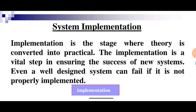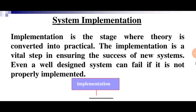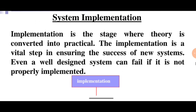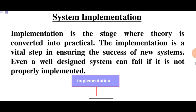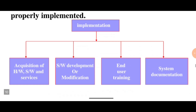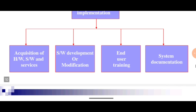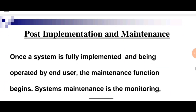The next phase is system implementation, which is a very important part of the SDLC model. In this phase we implement the whole system to meet user requirements. This is the stage where theory is converted into practice. The implementation is a vital step in ensuring the success of a new system — even a well-designed system can fail if it is not properly implemented. The implementation phase is divided into four parts: acquisition of hardware, software, and services; software development or modification; end-user training; and system documentation.